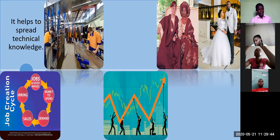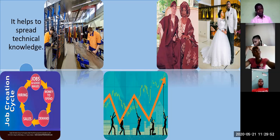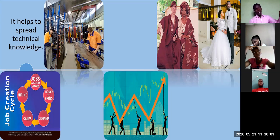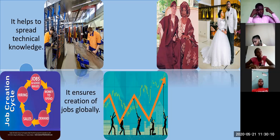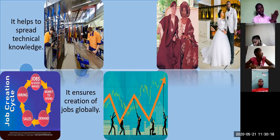We have refineries in Nigeria, but none of them is working. We refine our oil elsewhere. Those refineries were built based on our interaction with technologically inclined states. So when we interact with other states, it helps to spread technological knowledge — in terms of producing things in the technological field, in mechanical engineering, civil engineering, among others. It also ensures the creation of jobs.